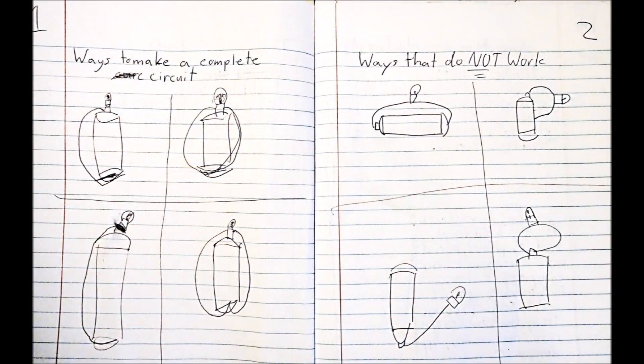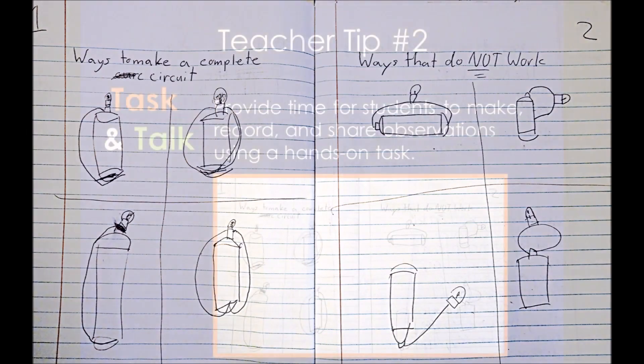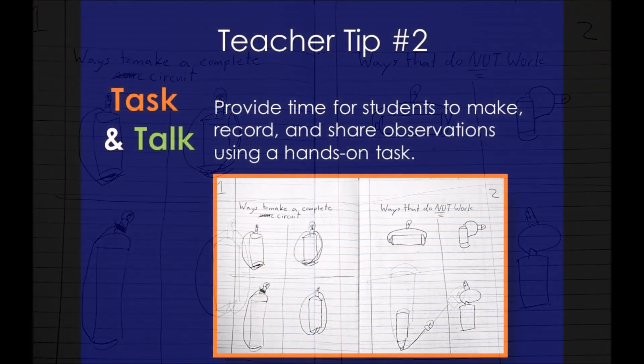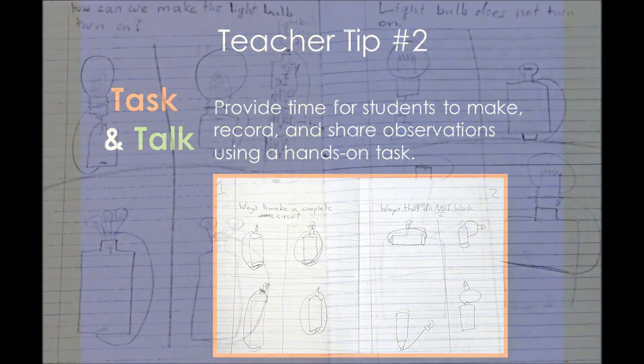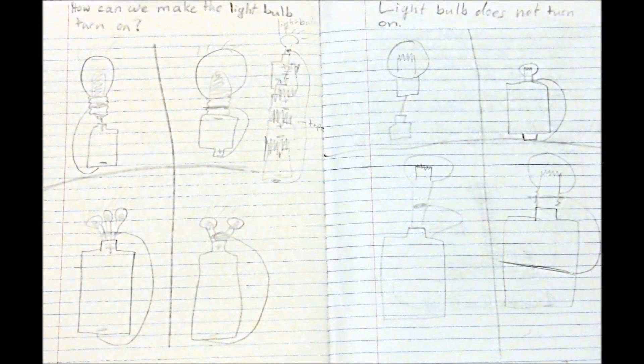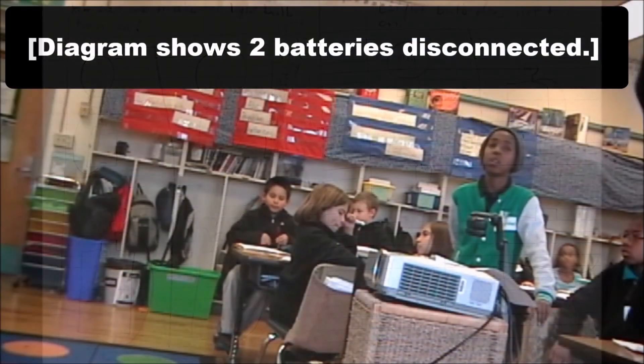Students manipulated the materials to create different circuits and recorded their observations in their notebooks using drawings and labels. In the next clip, the teacher has students share their observations with the class. Before pressing students to think more deeply about how a circuit works, the teacher uses particular talk moves to help students clarify their descriptions and talk with each other about their observations.